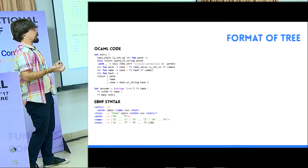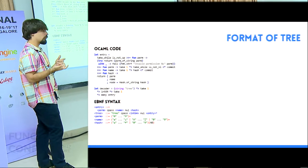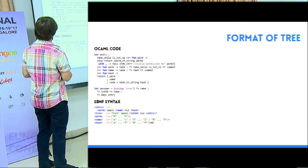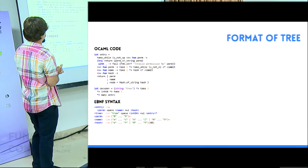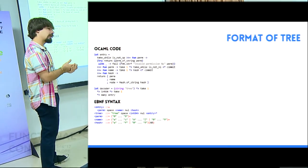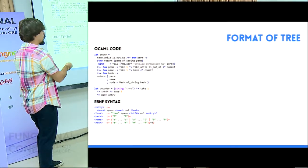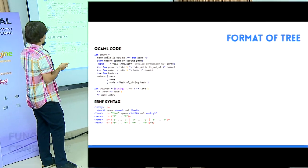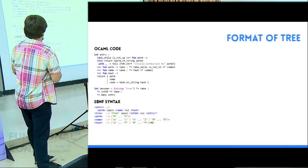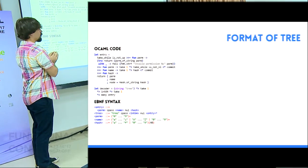After, we have the tree. As I said, the tree is like a directory, so it's just a list of entries which describe each file and each subdirectory in your directory. For each entry we have the permission — it's the kind of object, so it's a directory, a Git link, a file, or something like this — and the permission, like if we can write or execute the file. And after, we have the name of the entry, like the file name or the name of the directory, and we have the unique identifier, so the hash to the Git object.